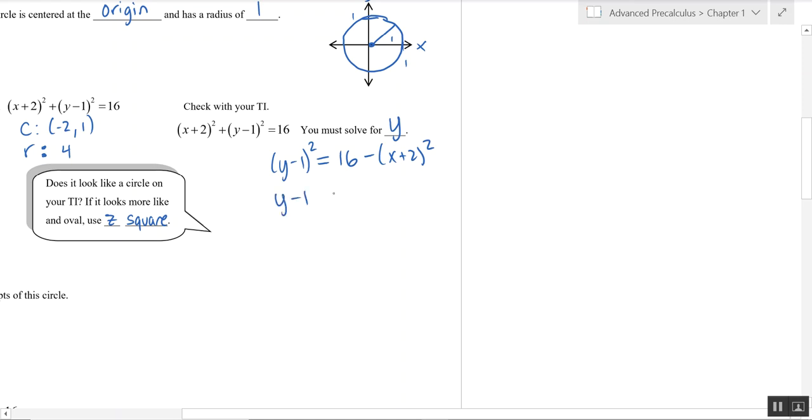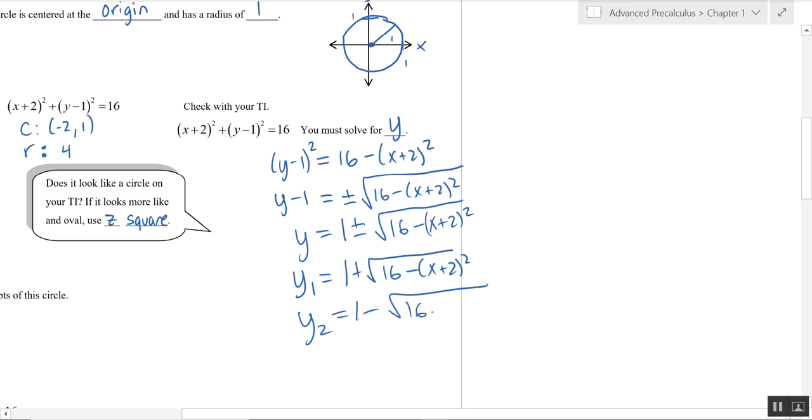Square root both sides and make sure you have a plus or minus. And add one to both sides and we are done. So we've got two equations here. It looks like one, but because of the plus or minus, I'm going to make Y1 one plus the square root of 16 minus X plus two quantity squared, and Y2, one minus the square root of 16 minus X plus two squared.